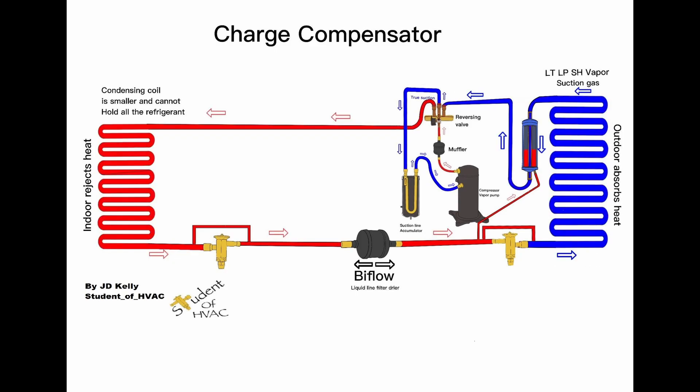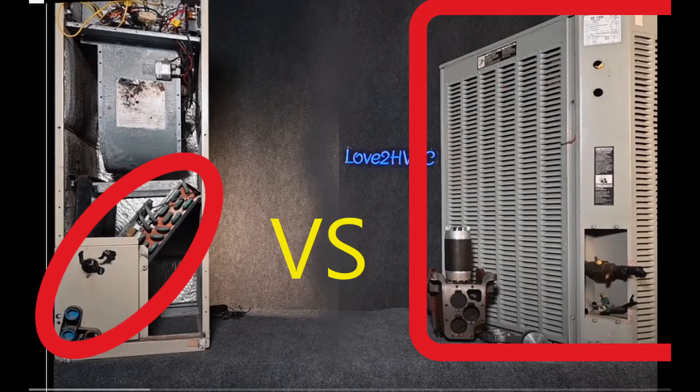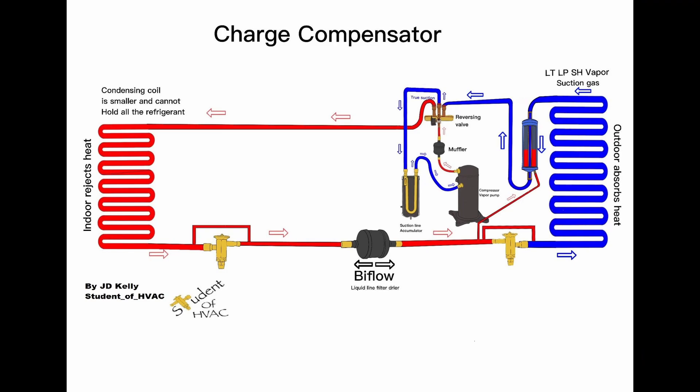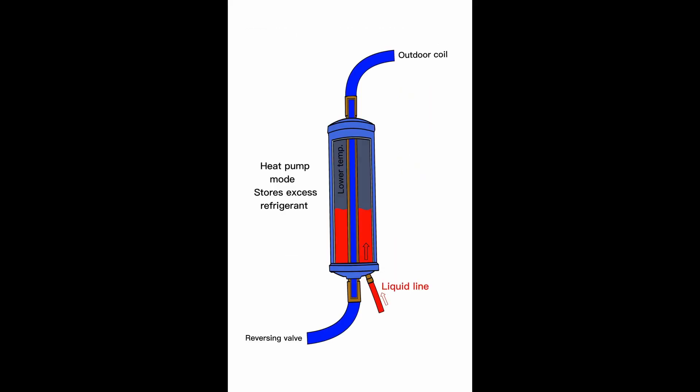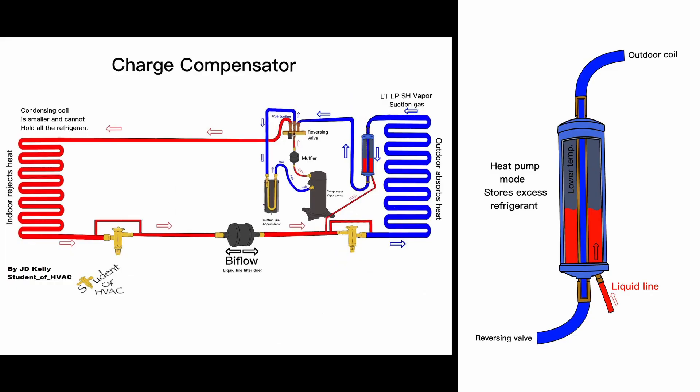When we went into heat pump mode, the indoor coil became the condensing coil and there isn't enough volume in that indoor coil. So we had extra refrigerant we had to put somewhere. In that case, that extra refrigerant went into the charge compensator because that vapor line was now a low temperature, low pressure. It allowed for that excess liquid refrigerant to migrate into the charge compensator and we had a place to store it.